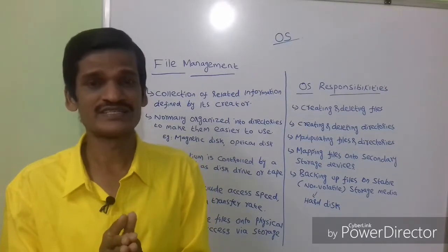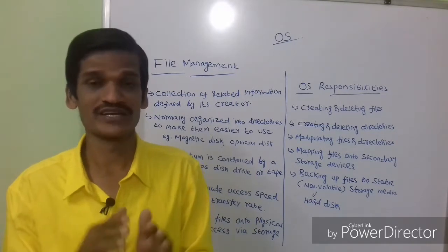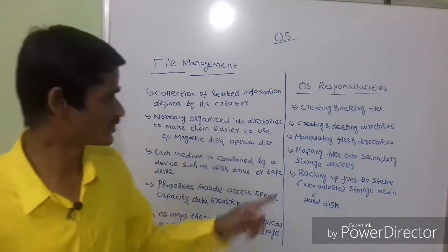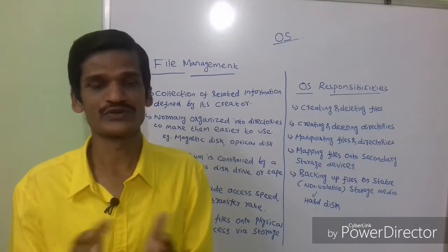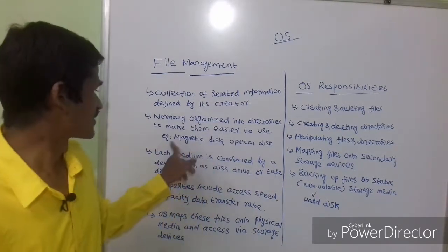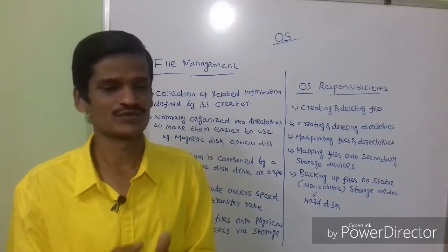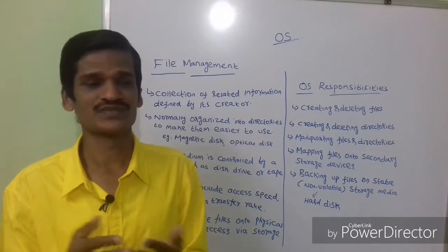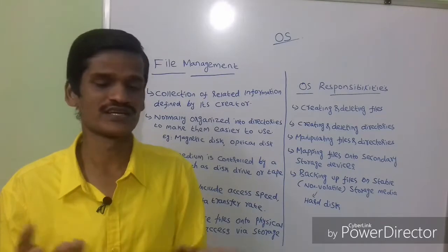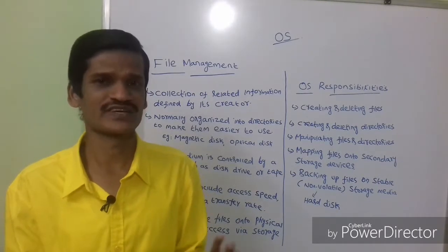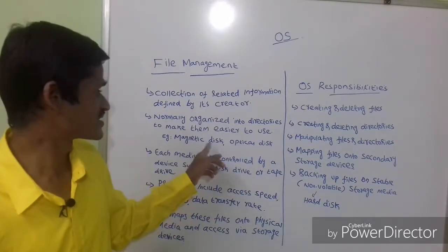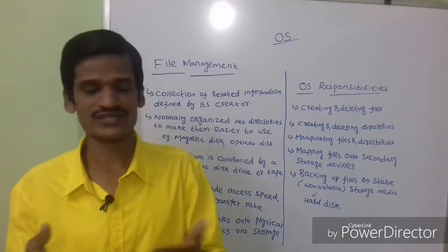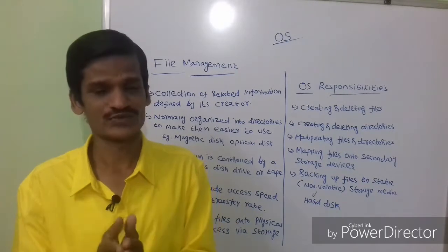Why do we use directories? If you use directories, you can easily retrieve the data whenever you want, at any point of time. For example, if you take magnetic disk and optical disk, you can store all your files in storage devices — magnetic disk, optical disk, pen drive, and so on. If you store data in an organized manner, then you can easily retrieve it whenever you want.